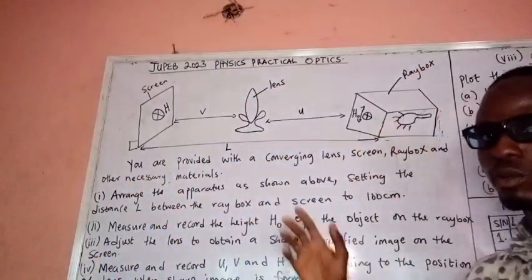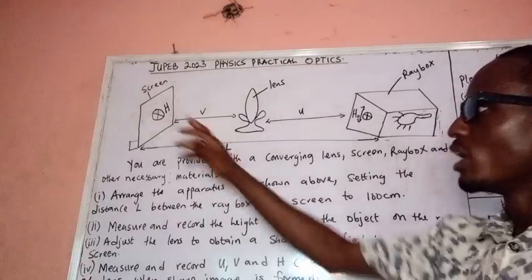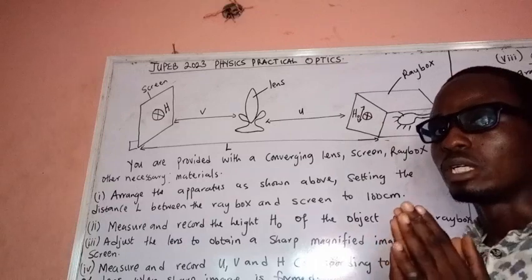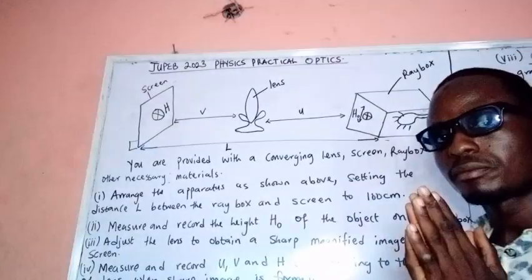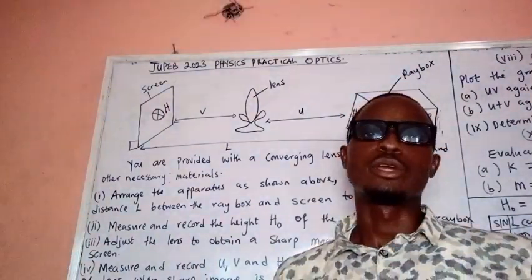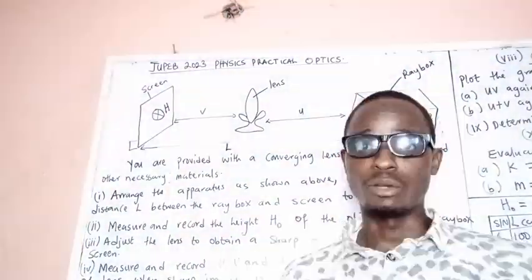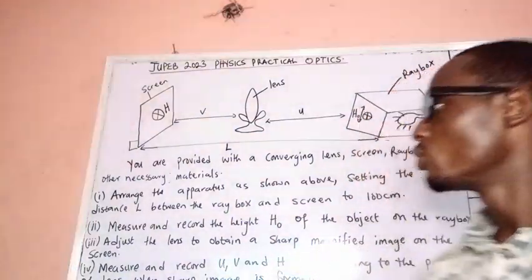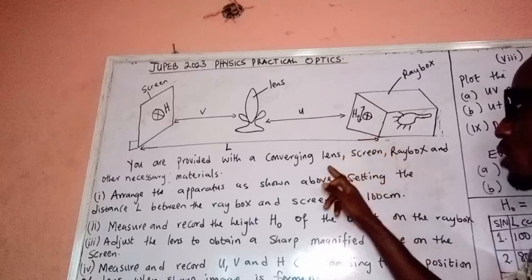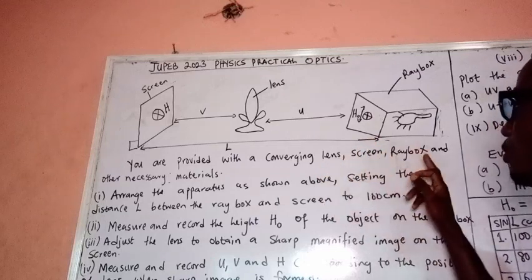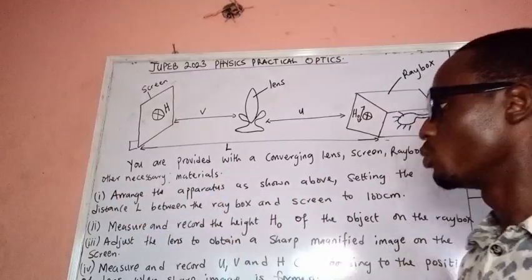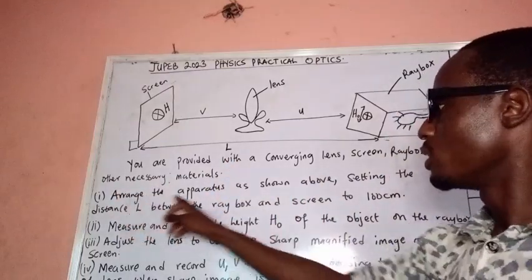Now let's look at this practical and how we're going to carry it out. We have the screen, the lens, and the ray box. In this video we're going to improvise for the ray box because of the unavailability of a light source, so we'll use another illuminating object. We carry out all the procedures: you are provided with a converging lens, screen, and ray box — of which we're going to improvise.